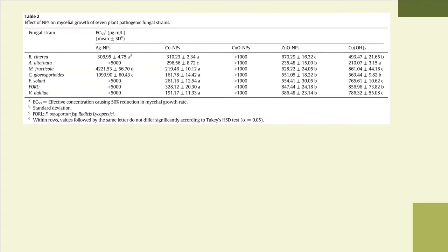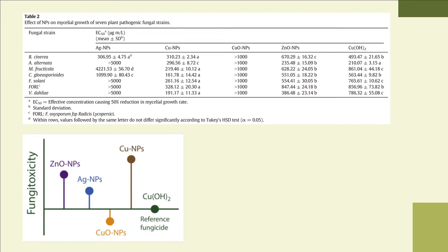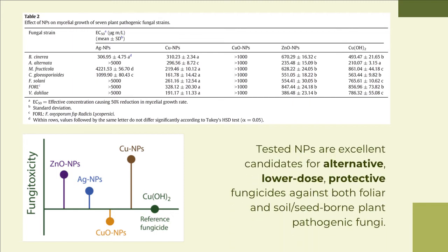Mycelial growth assays revealed that copper nanoparticles, with mean inhibition rates (EC50) ranging between 162 and 310 micrograms per milliliter, were most effective among the nanoparticles tested in inhibiting fungal growth, followed by zinc oxide nanoparticles with EC50 ranging between 235 and 848 micrograms per milliliter. All fungal species were practically insensitive to copper oxide and silver nanoparticles, except for B. cinerea. In conclusion, the tested nanoparticles are excellent candidates for alternative, lower-dose protective fungicides against both foliar and soil- or seed-borne plant pathogenic fungi.